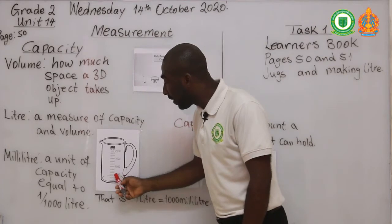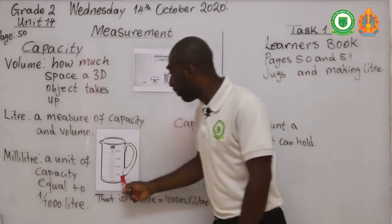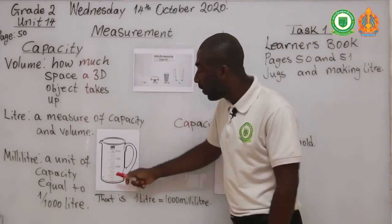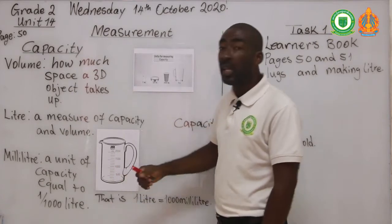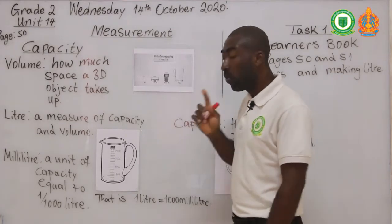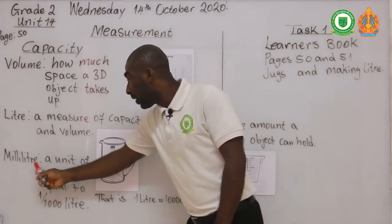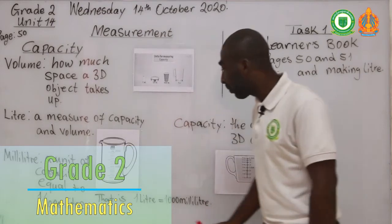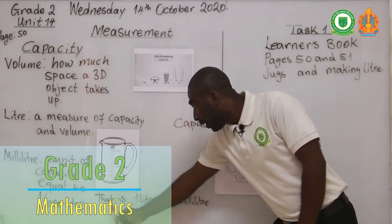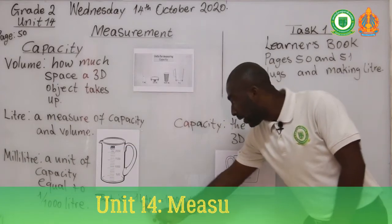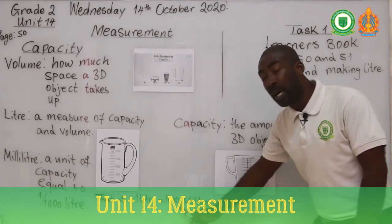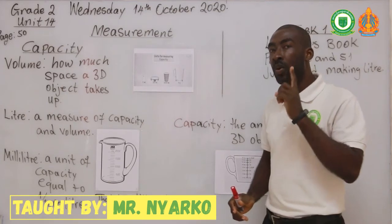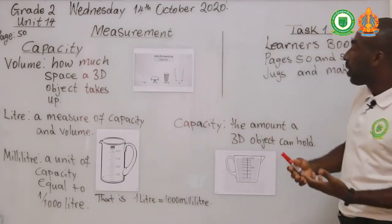Over here we have 500 milliliters. So 500 milliliters is small — that means the amount of water in here is very small. When it gets to 1000 milliliters, it is equal to 1 liter. So 1000 milliliters is equal to 1 liter.